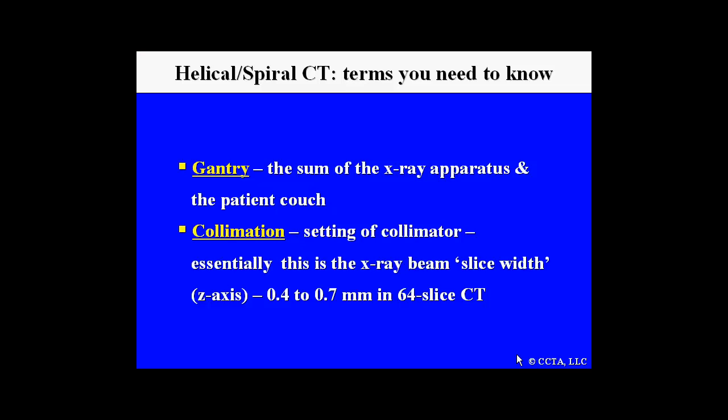Terms that you need to know involve the gantry, which is the sum of the x-ray apparatus and patient couch. Collimation, which is really the post-patient collimator, is basically the setting of the slice thickness. Slice thickness in traditional 64-slice scanning varies between 0.4 to 0.7 millimeters.